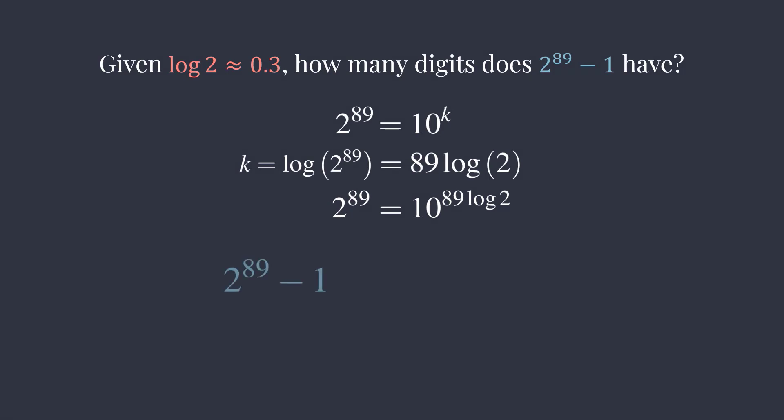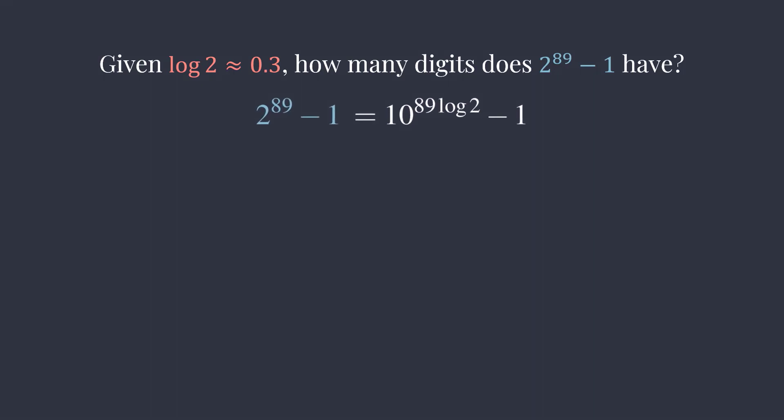Now, our original expression is equal to 10 to the 89 times log 2 minus 1. Given that log of 2 is approximately 0.3, we can replace log 2 by 0.3. So, this part becomes 10 to the 89 times 0.3, which is 10 to the 26.7.